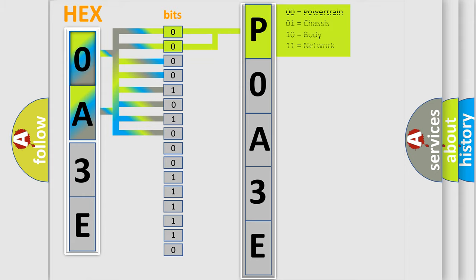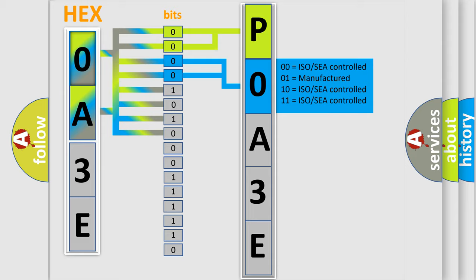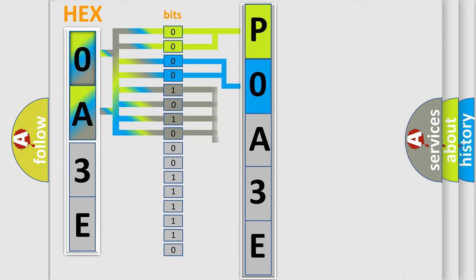By combining the first two bits, the basic character of the error code is expressed. The next two bits determine the second character. The last four bits of the first byte define the third character of the code.